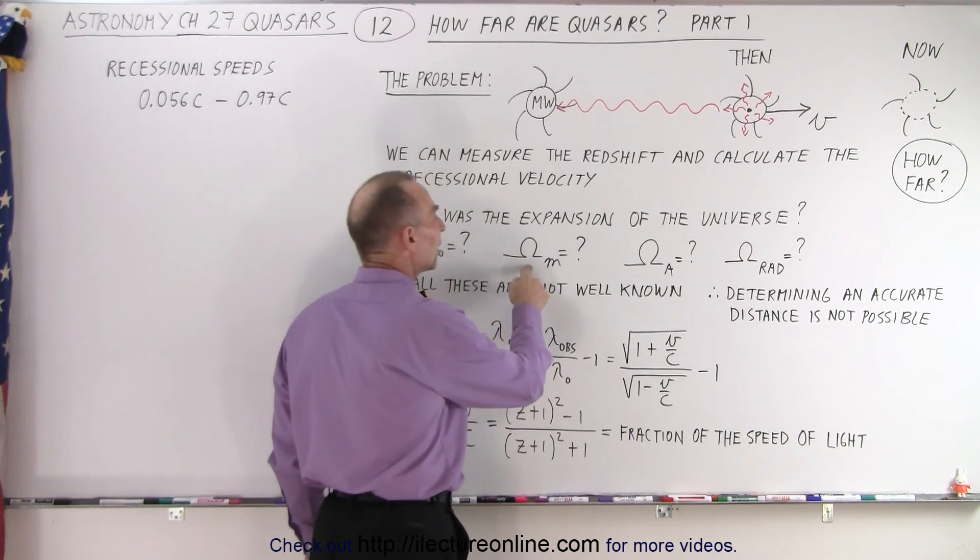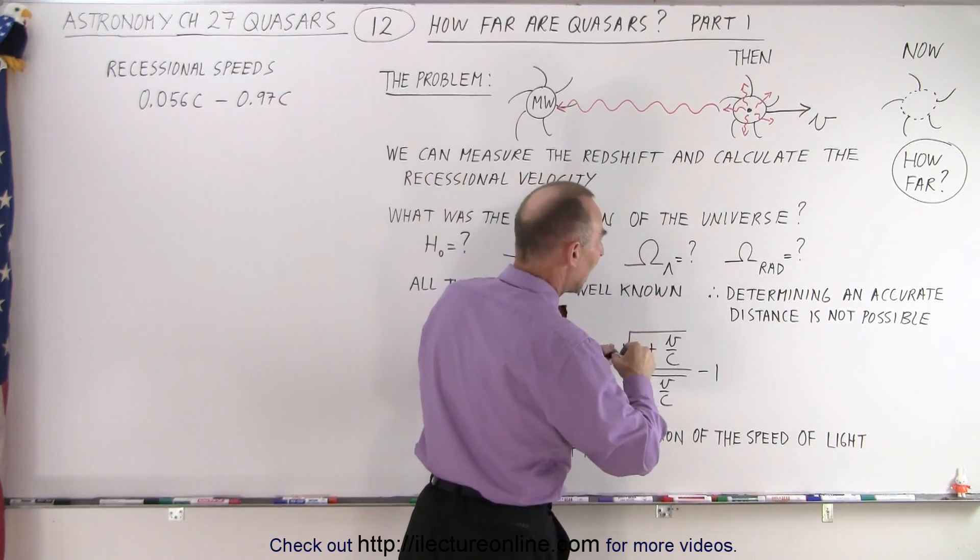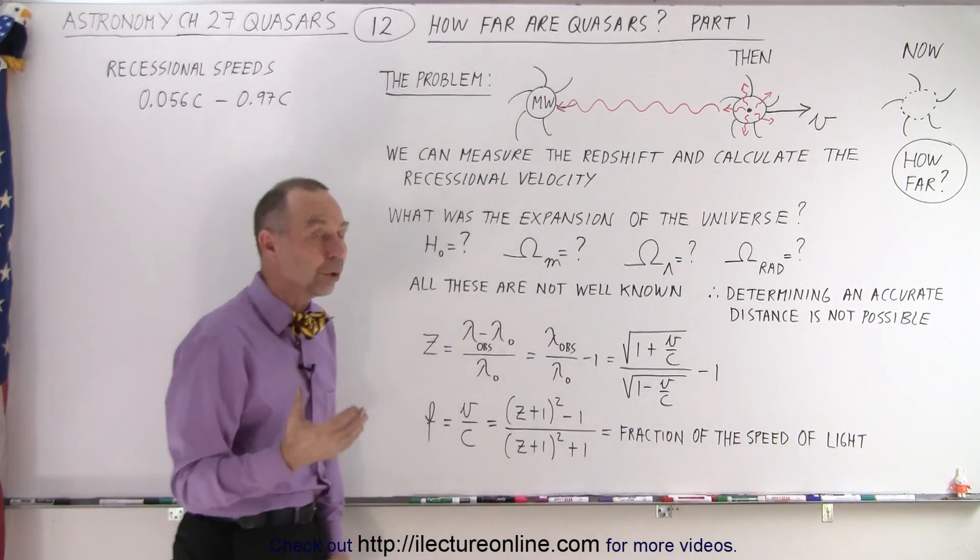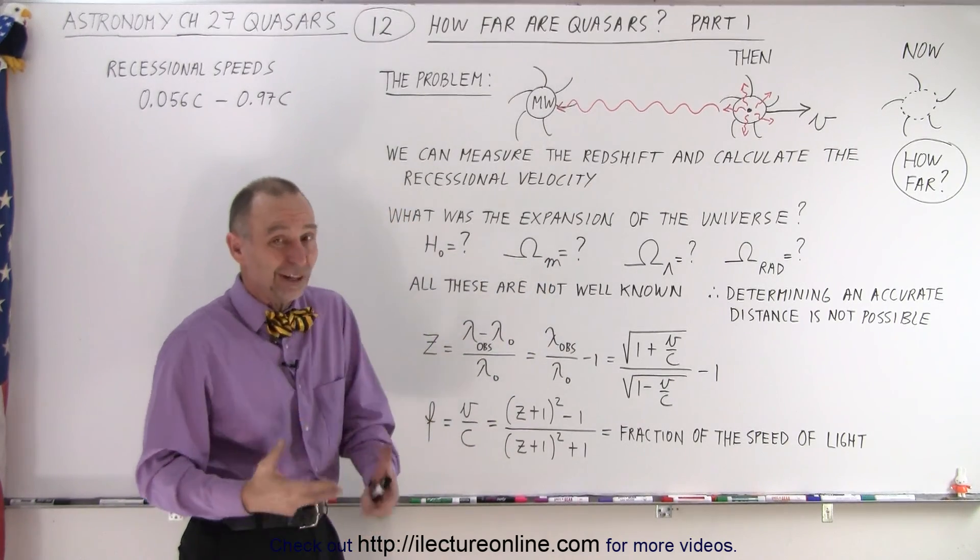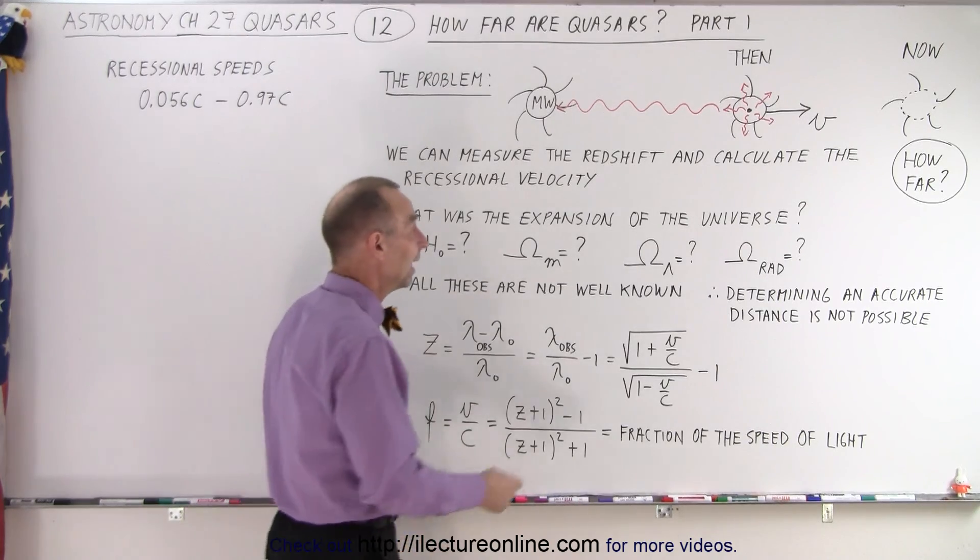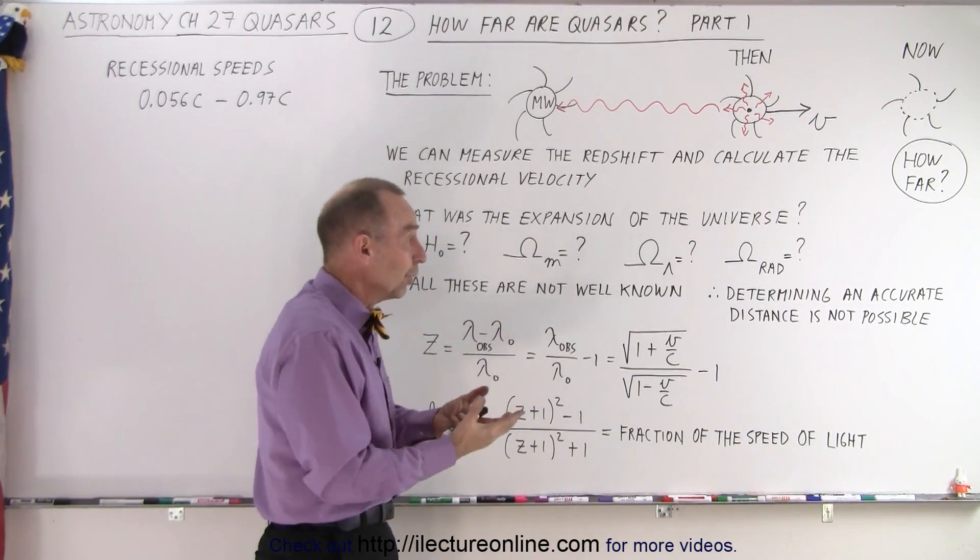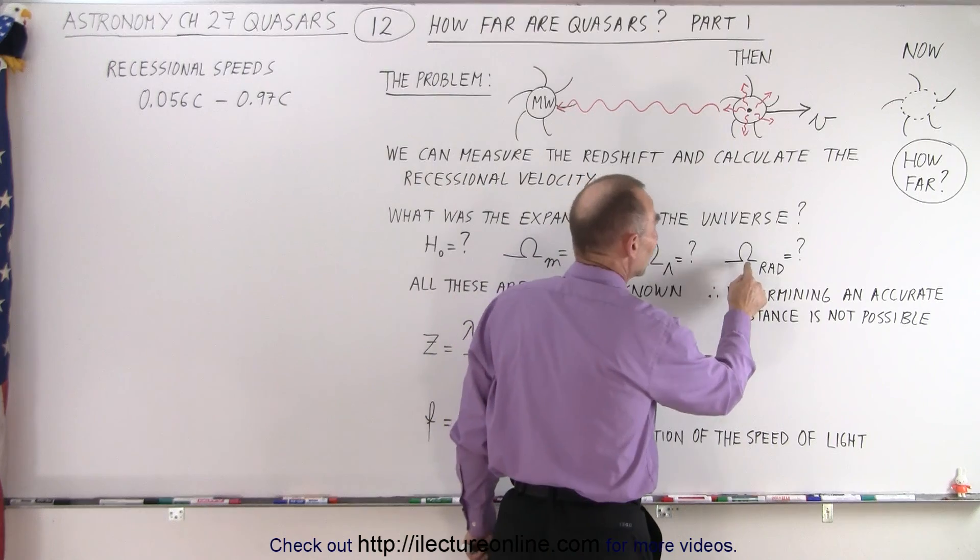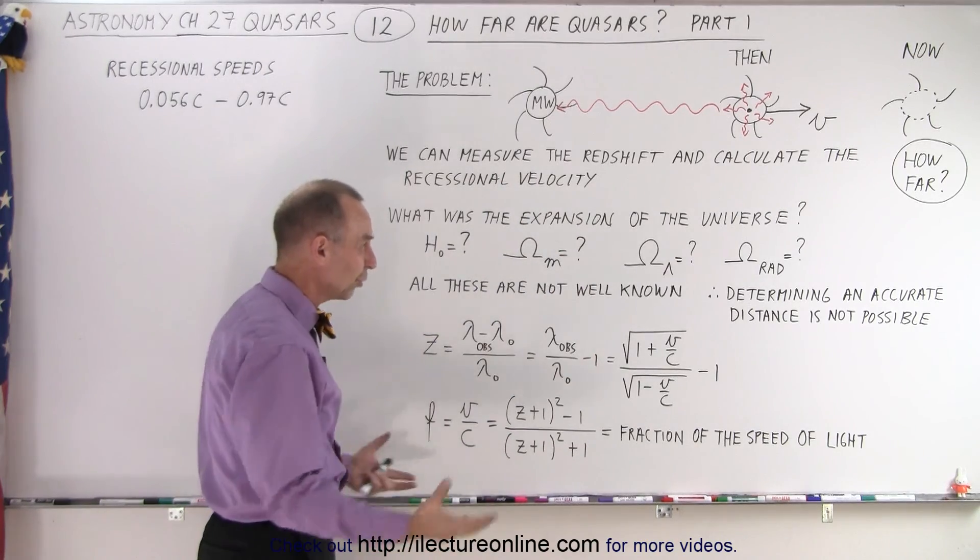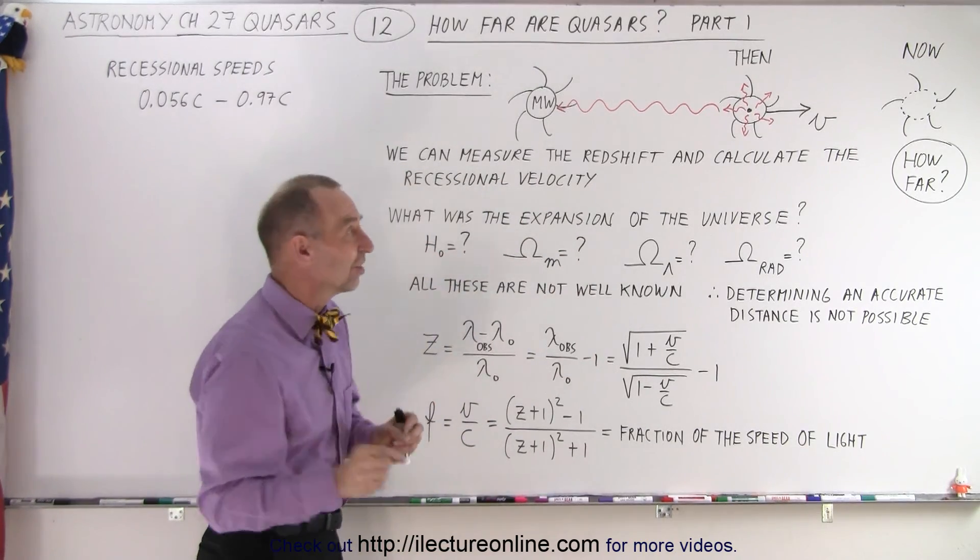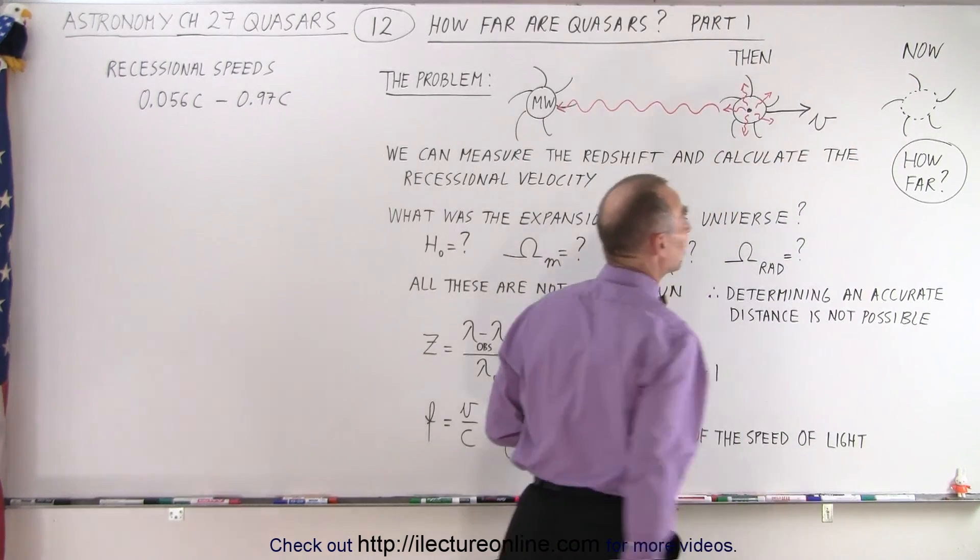Then we need the omega sub m, the omega sub lambda, and an omega of the radiation. In other words, the energy equivalent of all the mass in the universe, including the dark matter. And it's still trying to determine how much mass there is in the universe. Then this is the energy equivalent of the dark energy, which seems to be pushing the universe apart. And we don't know that accurately either. And we have to have an accurate value of the energy equivalent of all the neutrinos and all the radiation left over in the universe. Those three together plus the Hubble constant are all necessary to calculate accurately how fast this will be moving from the place where it was then to the place where it is now.